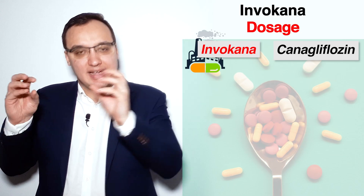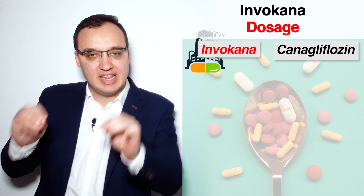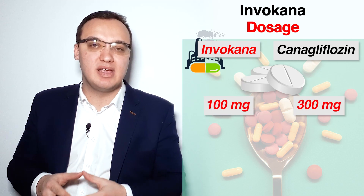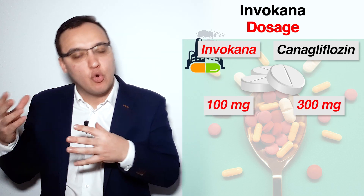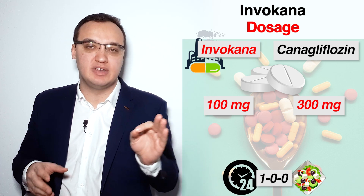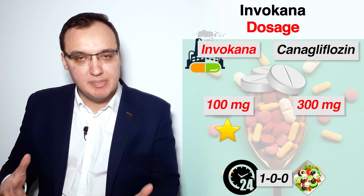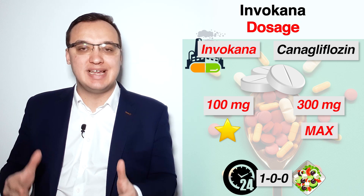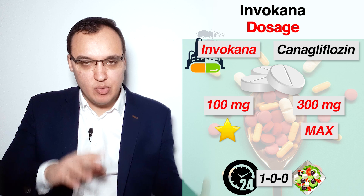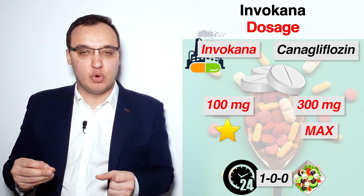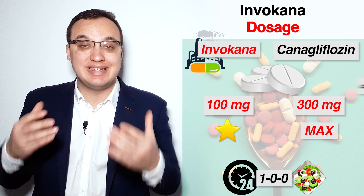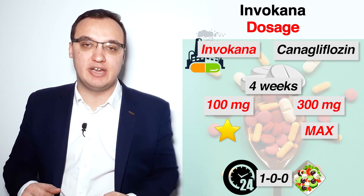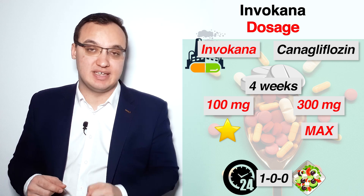Invokana can be given as 100 mg or 300 mg tablets before the first meal of the day. We usually start with a 100 mg dose once daily. The maximum dose of Canagliflozin is 300 mg once daily. When we start with the 100 mg dose, we need to give this dose for at least 4 weeks before we can increase the dose up to 300 mg once daily, but only if necessary.